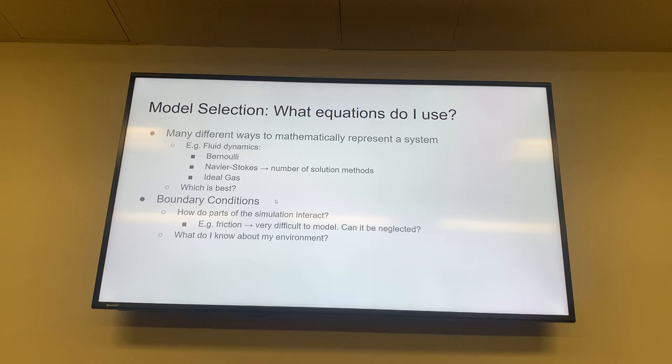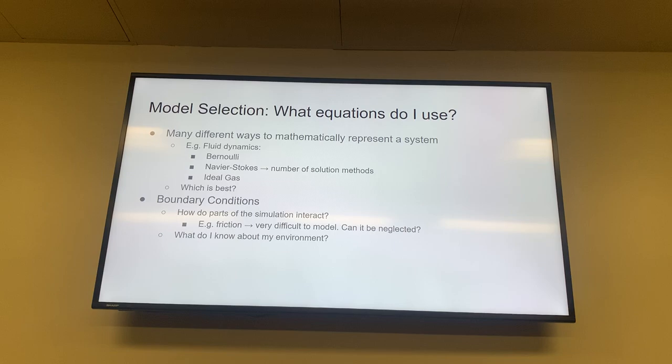Boundary conditions — which Max was mentioning — are also very important, because you need to figure out how parts of the simulation interact. Friction between two parts, for instance, requires second-order solving and can be very difficult to model. Friction is one of those things very likely to cause divergence, especially with a harsh friction condition. One thing you want to determine is can it be neglected — can I model this as bonded or frictionless, depending on how it moves?